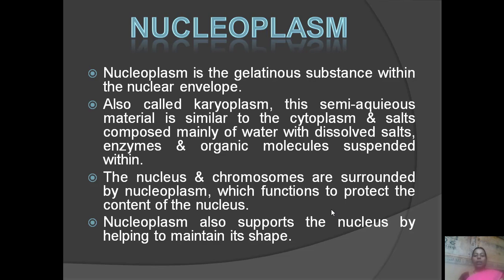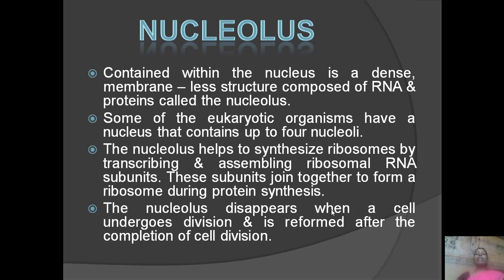Chromosomes are surrounded by the nucleolus, which functions to protect the nucleus. The nucleoplasm helps to maintain the shape of the nucleus. Nuclear pores are also part of this protective structure. The nucleus maintains its overall shape through the nucleoplasm and nuclear membrane.